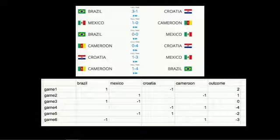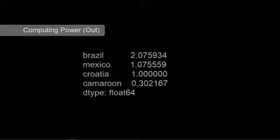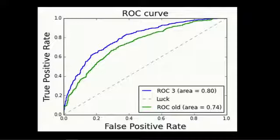The power statistic is essentially a way of automating the process where you say: team A beat team B, team B beat team C, so team A can probably beat team C. That gets complicated when you add more teams and more games. We put the outcomes into a matrix, run a logistic regression on it, and the logistic regression coefficients become the relative strengths of the teams — so here we have Brazil at the top and Cameroon at the bottom. We used an ROC curve to see how well we did; the further you get from the diagonal luck line, the better. Adding the power statistic made our models noticeably better.